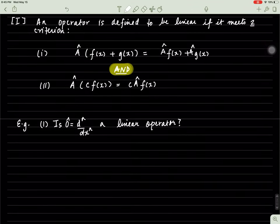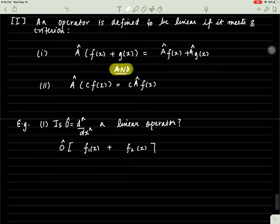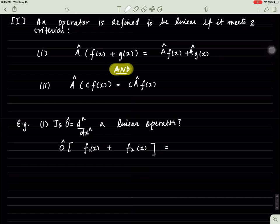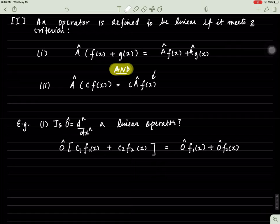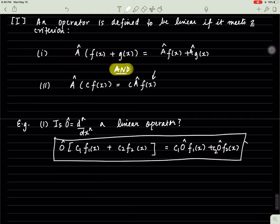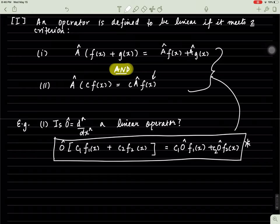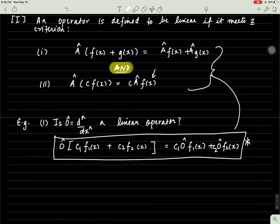So with that in mind, is this a linear operator? We know the classification of what a linear operator is. If a linear operator acts on f of x plus another function, then it should produce this result. If you put constants c1 and c2 here with this second rule in mind, I can rewrite this equation as this. So if you satisfy this condition, you are a linear operator. Let's see if this operator satisfies this condition.